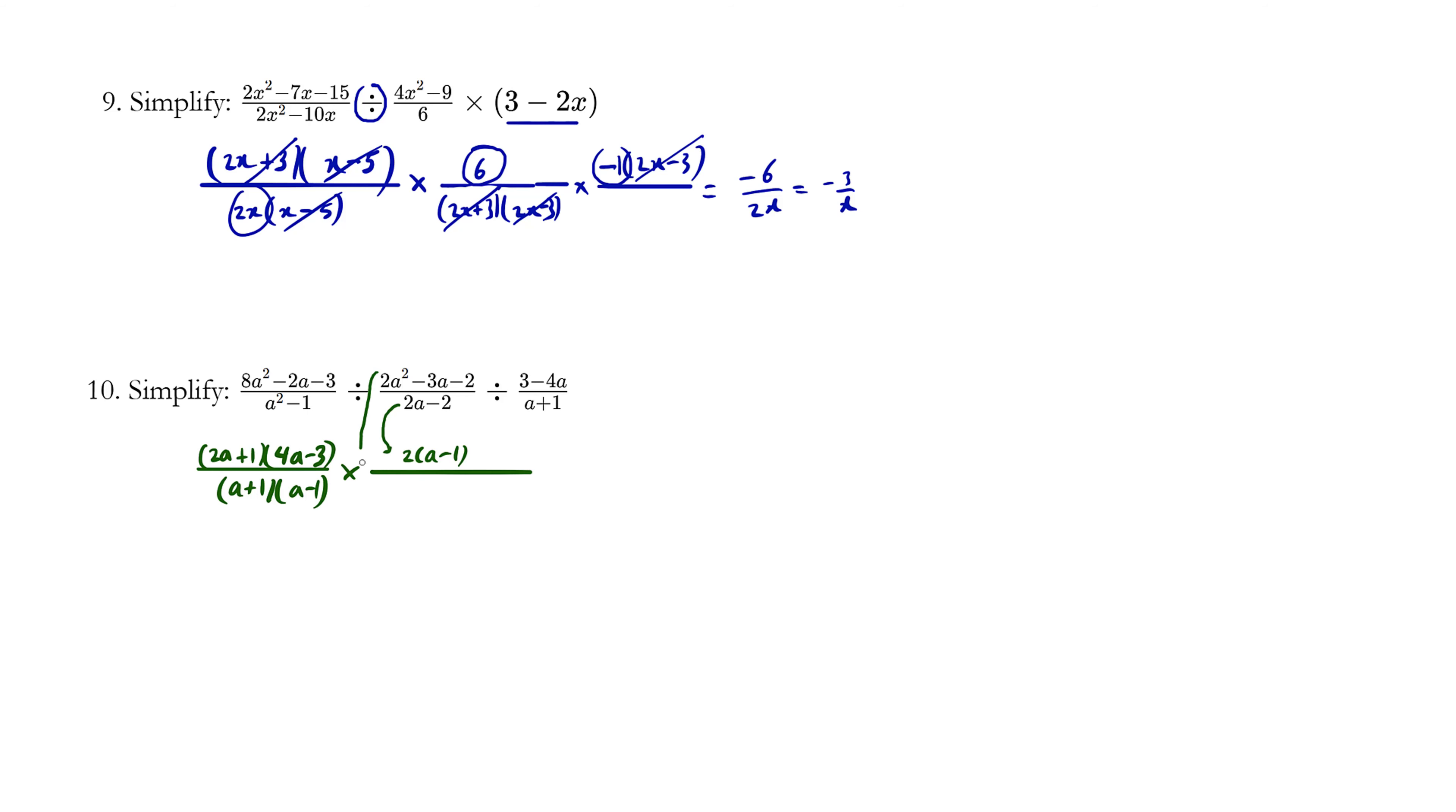And so this part here, the trinomial, gets factored to the bottom. And now we change this division statement to a multiplication statement. And this denominator now becomes the numerator. And this numerator now becomes the denominator. And we're going to factor out a negative one. Negative one times four a minus three.